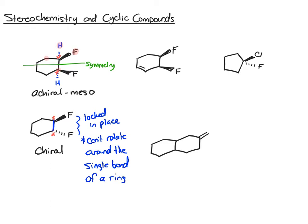You cannot rotate around a ring — this single bond here cannot rotate. If you have trouble visualizing that, build a molecular model and try to rotate it; you won't be able to. In the next example, we have a chiral center here and a chiral center here. You might be tempted to draw a symmetry plane, but the double bond de-symmetrizes that side of the ring. For that reason you can't draw a plane of symmetry, and this is a chiral molecule.